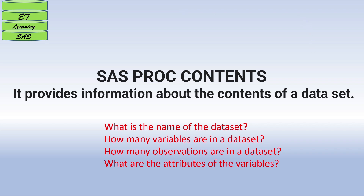Today I'm going to explain the SAS PROC CONTENTS procedure. This procedure is very important — it provides information about the contents of a dataset, like the name of the dataset, how many variables are in it, how many observations there are, and what the attributes of those variables are, whether they are numeric or character variables.